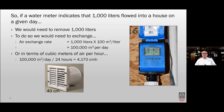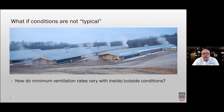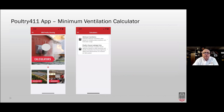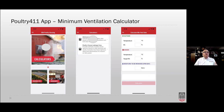What if conditions are not typical? How do minimum ventilation rates vary with changing inside and outside conditions? We developed an app for that — it's called Poultry 411, available for Android and iPhone free of charge. You open the app, click on Calculators, then click on Minimum Ventilation. The calculator asks for outside temperature and humidity, inside temperature and target humidity, and the amount of moisture to remove per day — generally determined by your water meter. More water in means more ventilation needed.